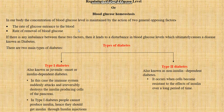If there is a disturbance between these two factors — that is, entrance of glucose to blood and removal of blood glucose — then there is disturbance in the homeostasis system of our body, and this gives rise to a problem known as diabetes.